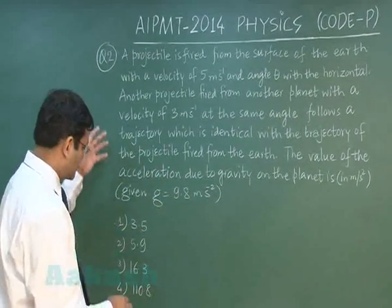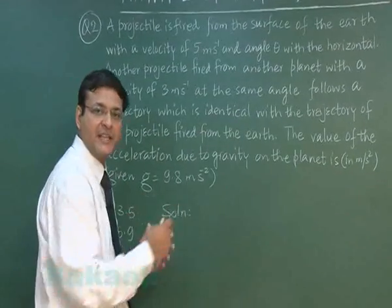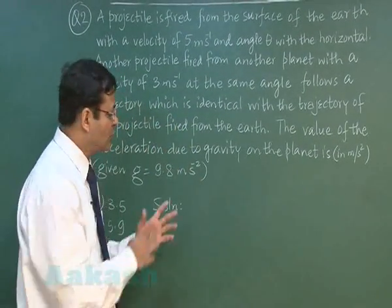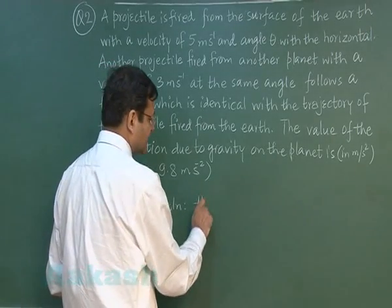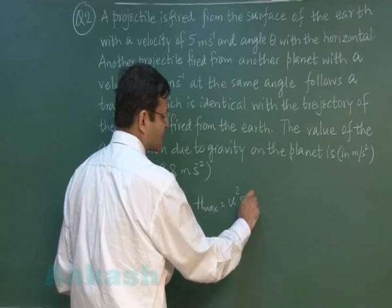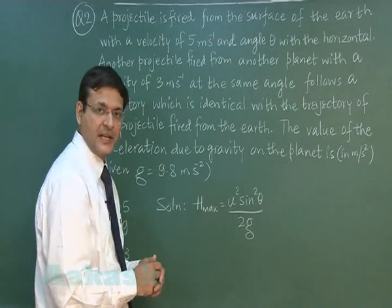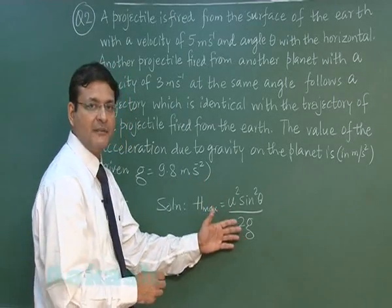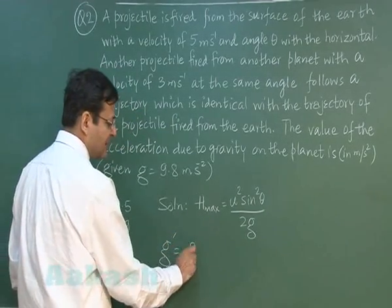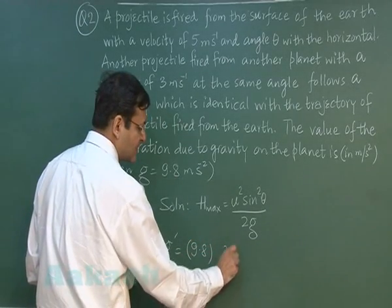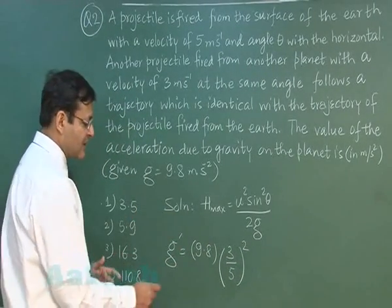Since the trajectory is the same, the horizontal range must be the same, and the maximum height must also be the same. You can balance either — maximum height or horizontal range. The expression for maximum height is u² sin²θ / 2g. Since theta is the same in both cases and the maximum height is the same, acceleration due to gravity is directly proportional to u². So on the new planet, g' equals g multiplied by the square of the speed ratio.